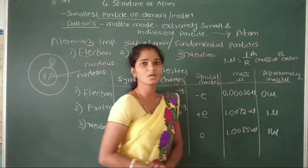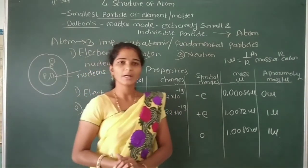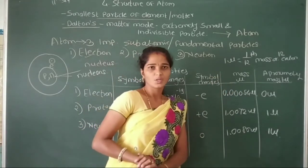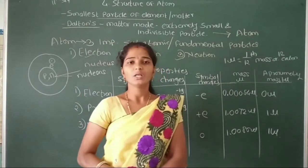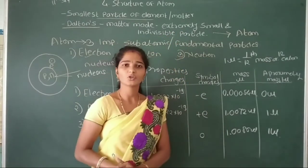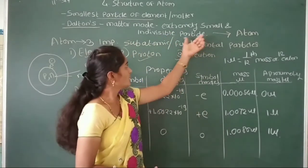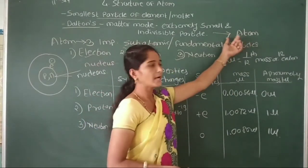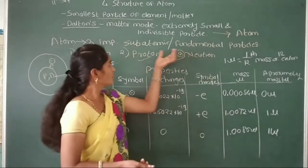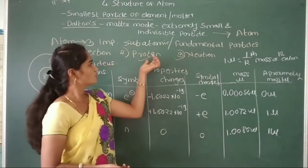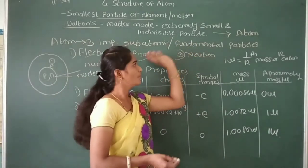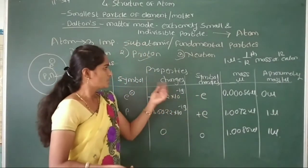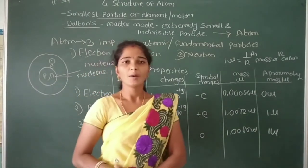So, in today's lecture we learned about: the definition of atom — it is the smallest and invisible particle. The word 'atom' is a Greek word meaning 'individual.' We also learned about the sub-atomic particles — electrons, protons, and neutrons — which are called fundamental particles. We also covered some key properties of these 3 sub-atomic particles: charges, symbol, and mass.